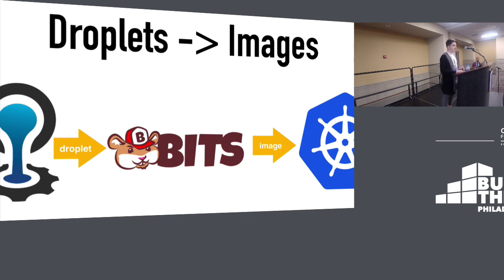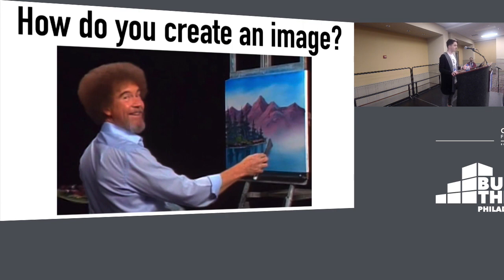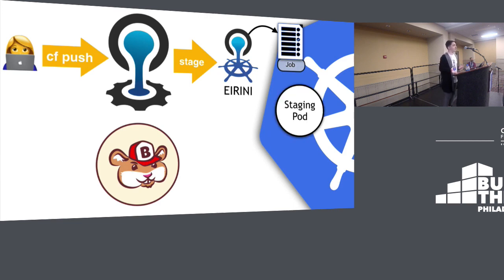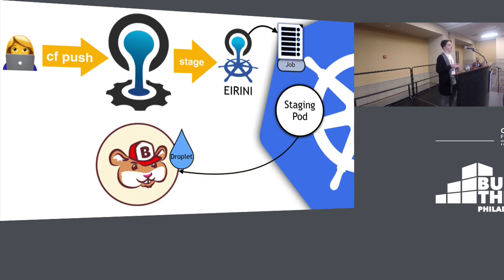How do you actually create an image? Let's take a step back and see how we do staging. If you do a CF push, Cloud Controller sends a staging request to Irini. Irini creates a job in Kubernetes, which is just a one-off task running what we call the recipe code. The recipe code does exactly the same things Diego does: it pulls down your app bits, runs the buildpack app lifecycle code to detect buildpacks and build the droplet, then uploads that droplet back to Cloud Foundry so BitService can access it later.